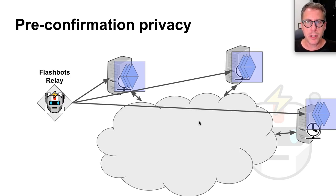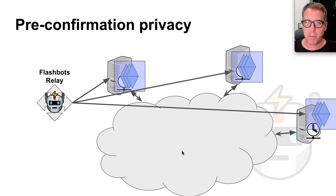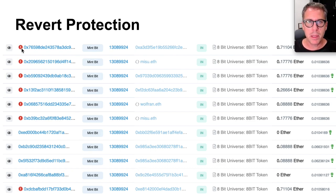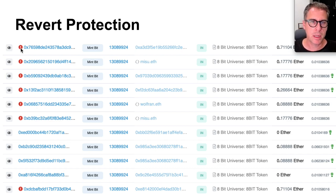We also get pre-confirmation privacy. By sending transactions directly to these miners and avoiding this pending pool or dark forest, we don't give our competitors a chance to see what we're doing until it's too late — when it appears in a block. We also get revert protection. One of the agreements that Flashbots-enabled miners have is that if a transaction you submit reverts when it executes on chain, it won't be included by the miner. It will be discarded and the next transaction will be selected instead.